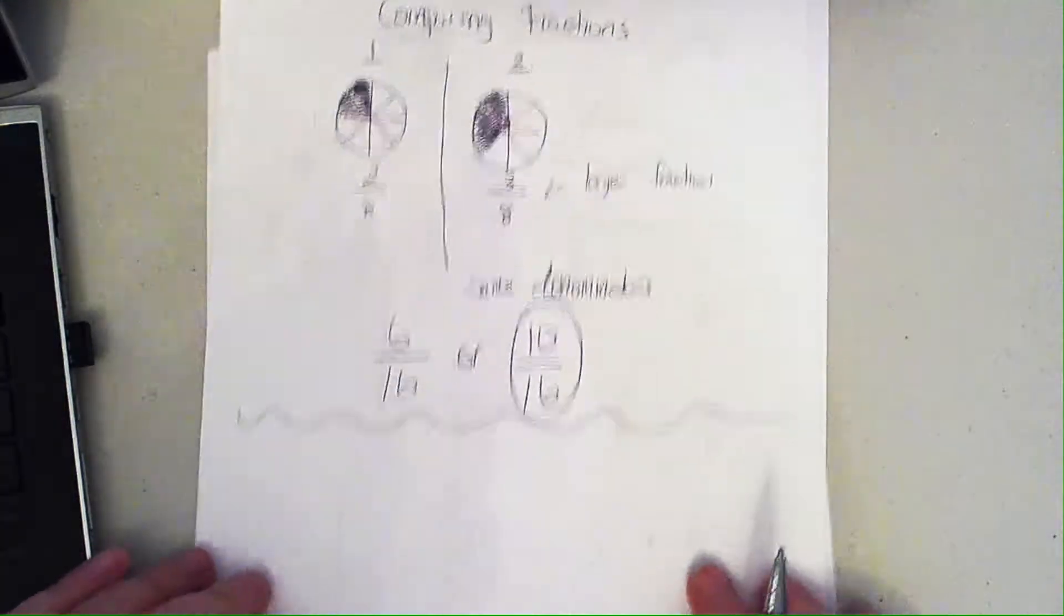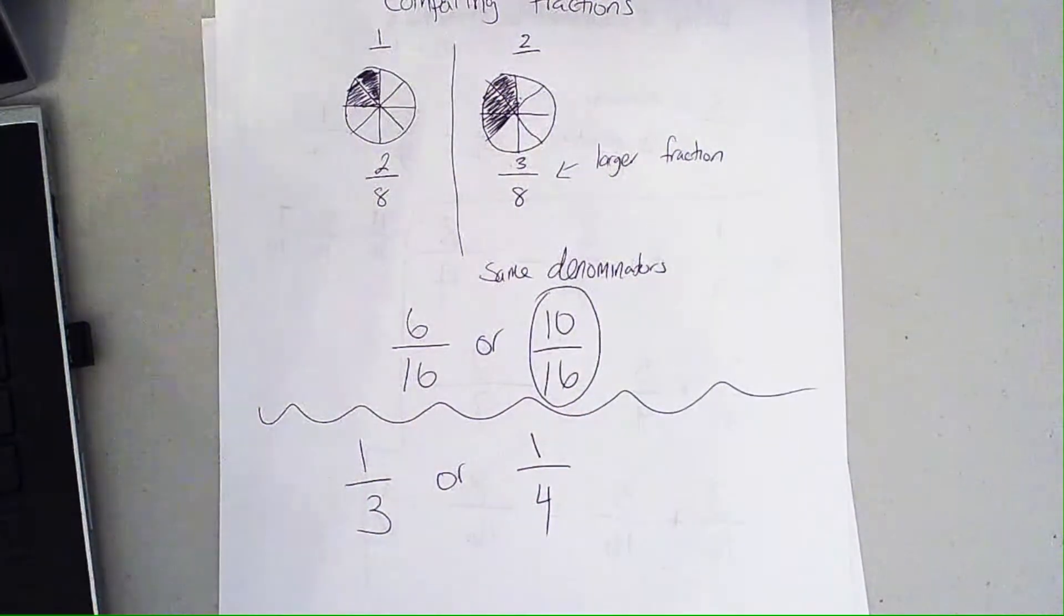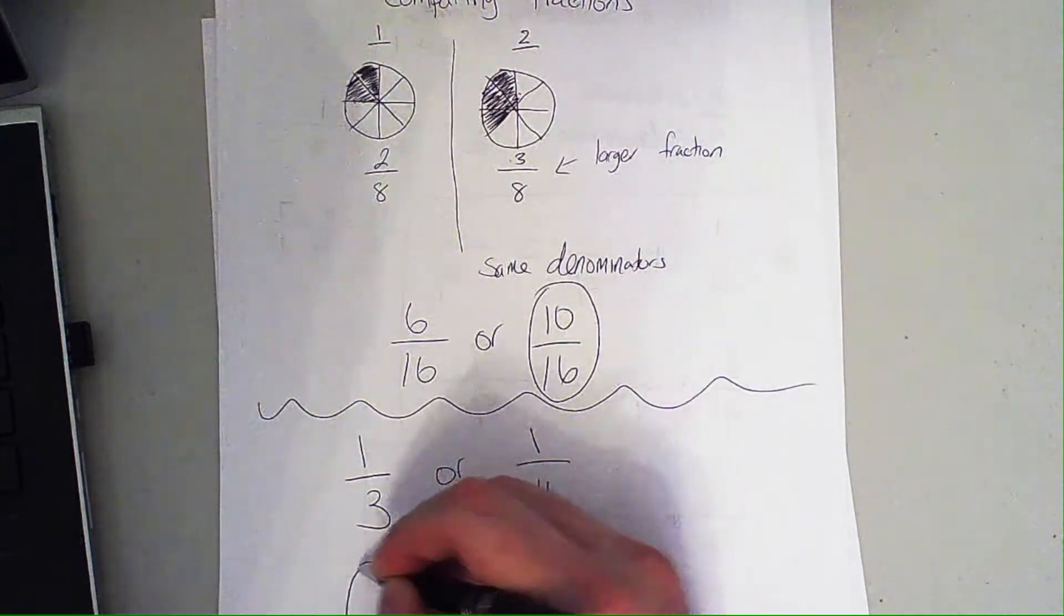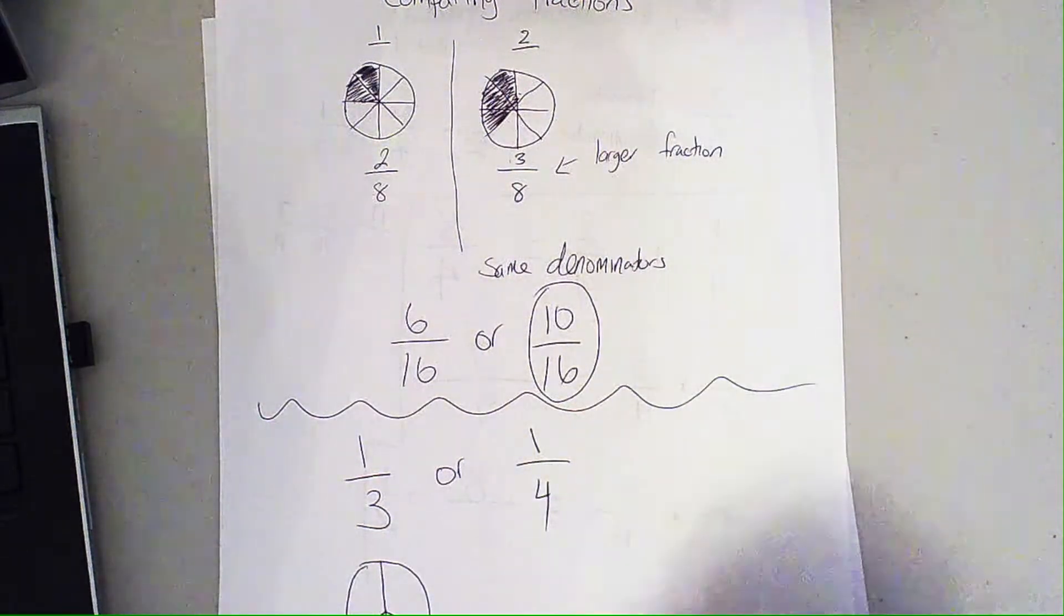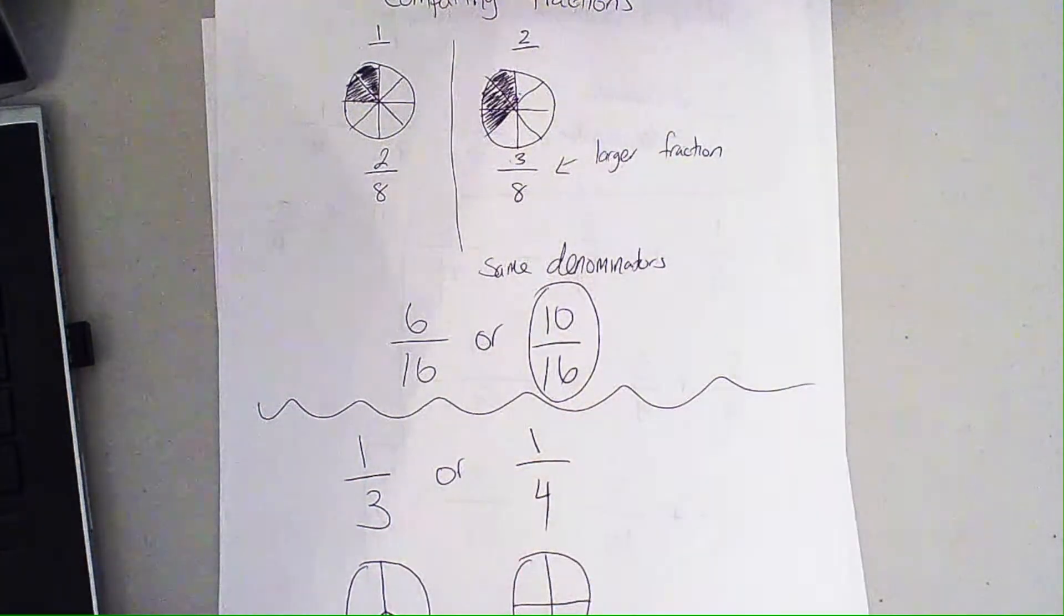Now I'm going to show you another example: 1/3 or 1/4, which is the larger fraction? Both numerators are the same, so we have a little dilemma here. We need to look to the denominators. This is a smaller number. Let's draw this out first before we jump to any conclusions. I'm going to go with the pizza example. This right here is a three piece pizza, and this one right here is a four piece pizza, three and four matching the denominators.